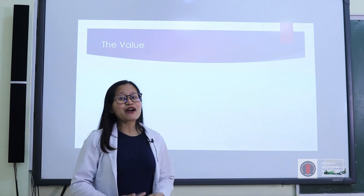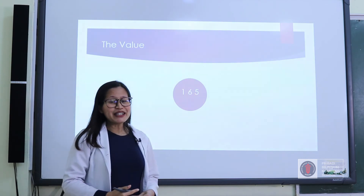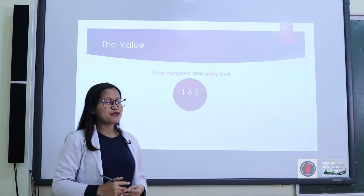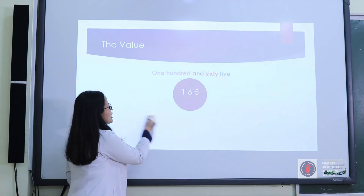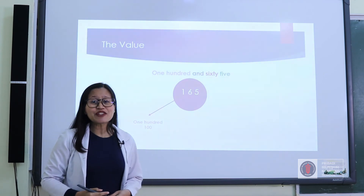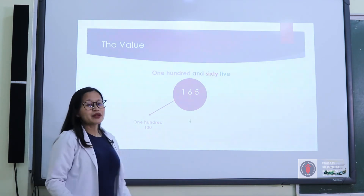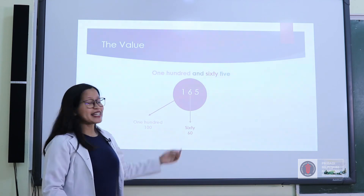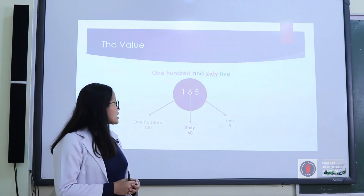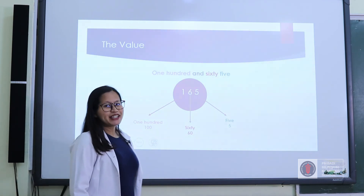Talking about place, we are also talking about value. With the same number, which is one hundred and sixty-five, each digit represents a value. The value of one in one hundred and sixty-five is one hundred. What about the value of six? Yes, it's sixty. Last but not least, the value of five is five itself. So we get one hundred, sixty, and five.